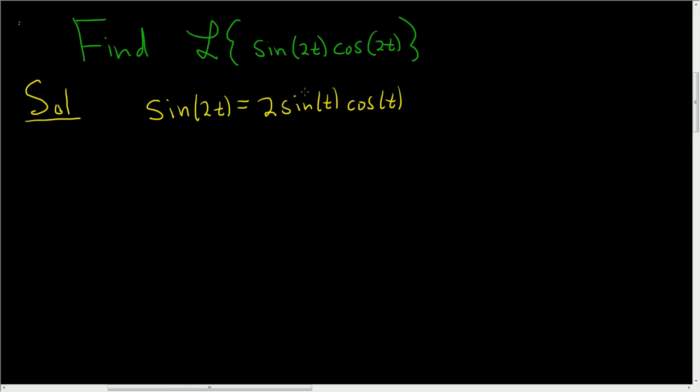You'll notice here we have a 2t and here we have a 2t. So we need to get a 2t here. Let's put 2t's here. If you have this, it will be 2 sine 2t cosine 2t.